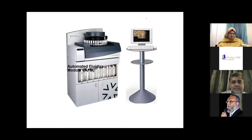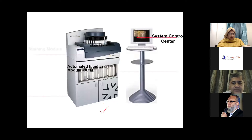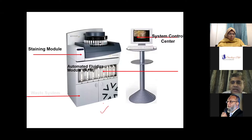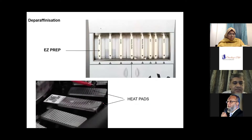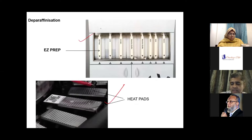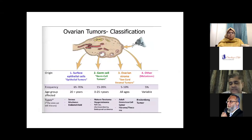Automated systems have come up. This is one from our own lab — the Benchmark XT from Ventana. The entire procedure is completely automated with the help of software. This is the staining module, the automatic module, and the system. The slides are kept on this automated stainer and stained with different protocols using all the reagents shown here. Finally, we get a colored product on the slide which we interpret as IHC.